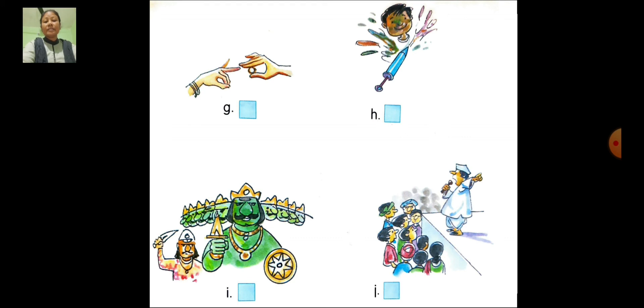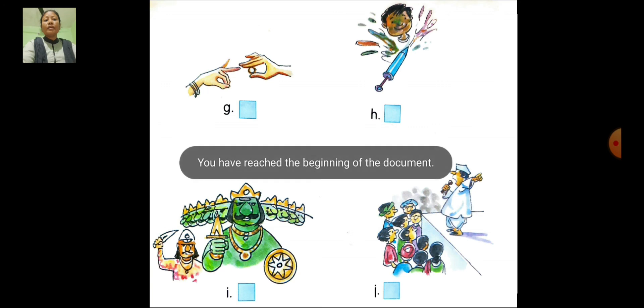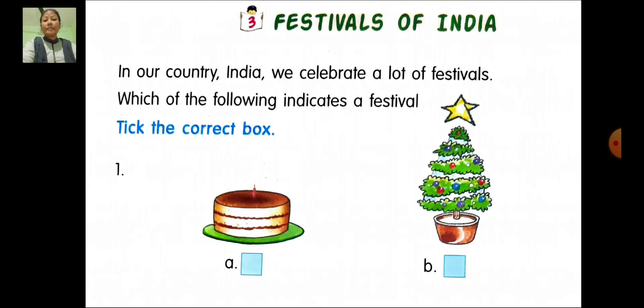Fifth number, look at the pictures. Which picture indicates the festival of India? You can see a picture of Ravan. It means Dussehra. We celebrate Dussehra on Diwali, so tick in the box and write the spelling of Dussehra: D-U-S-S-E-H-R-A. Dussehra is the festival of India.